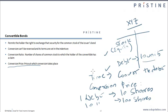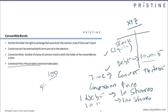The conversion price is the price at which conversion takes place. The terms and conditions of the contract would say that when the price of the bond that the lender is holding touches a particular level — for example, if he has taken the debt at 100, and the issuer says if this price goes to 96 — then you have the option to convert the debt into equity.